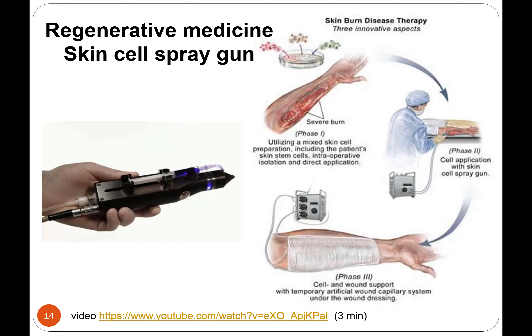This is a cool video showing a regenerative medicine skin cell spray gun. You're basically growing cells from the patient — their own cells — putting them in this airbrush and painting the cells back onto the patient, letting the cells regrow. This is to avoid having to do a big skin graft. Sometimes they would use pig skin to help treat burns, but this avoids that. You can't even tell where this guy was burned after this treatment.